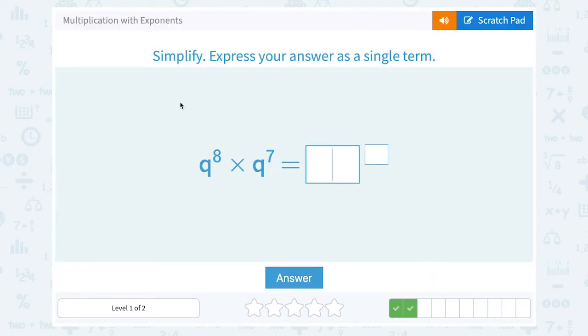We saw that our rule was add the exponents when we're multiplying with the same bases. So here we would say q to the 8 plus 7, which is 15th power.